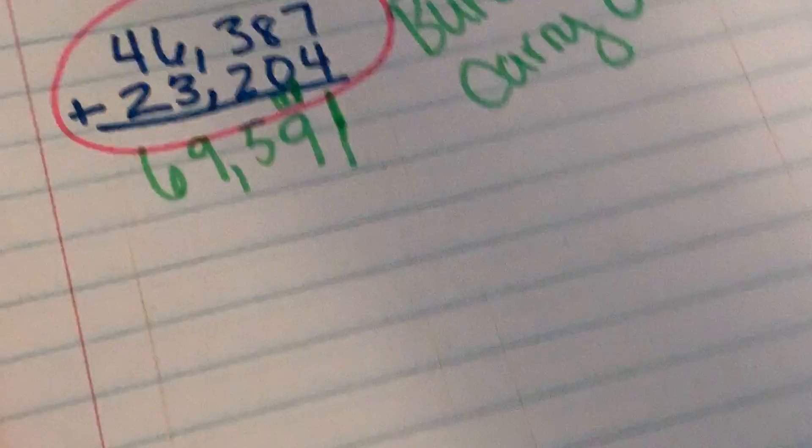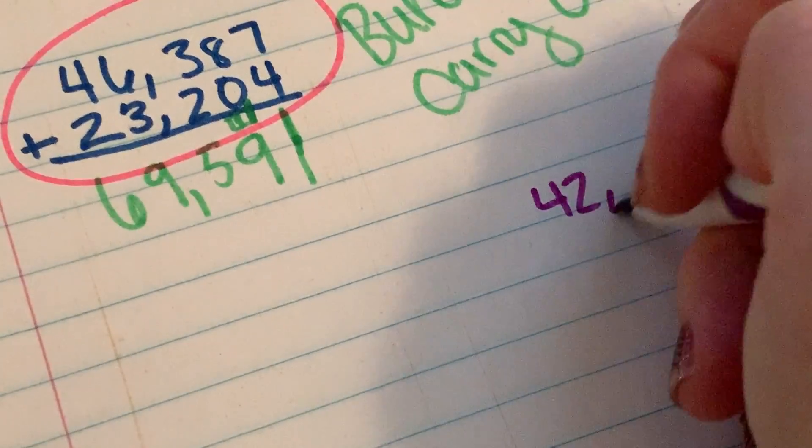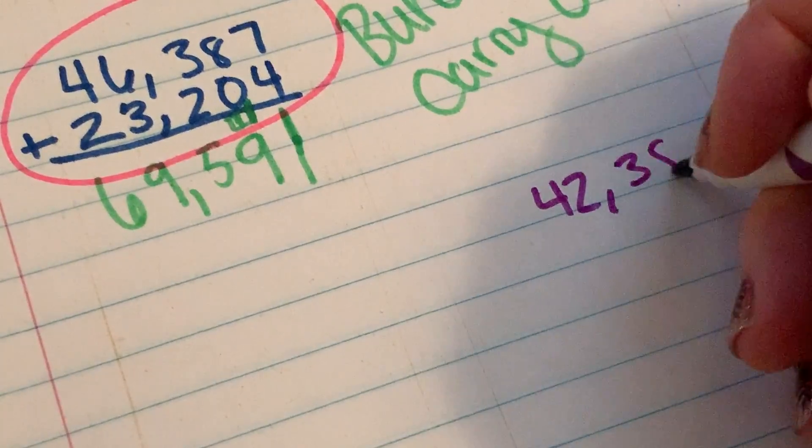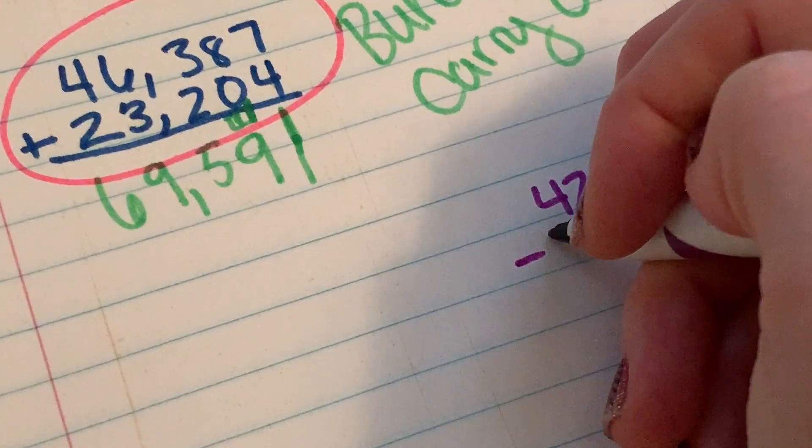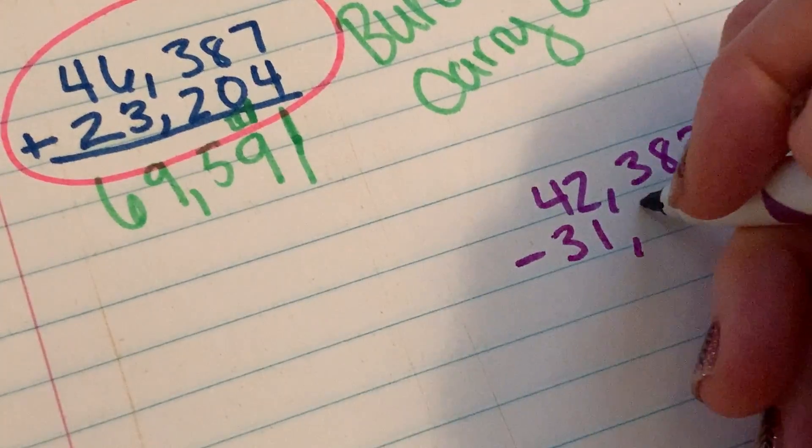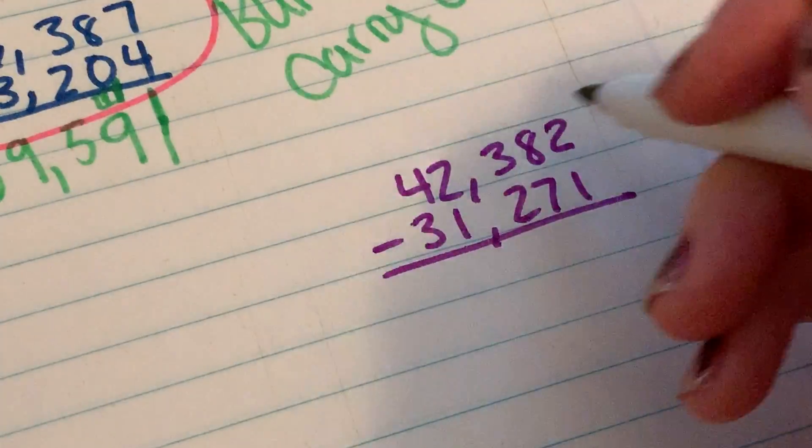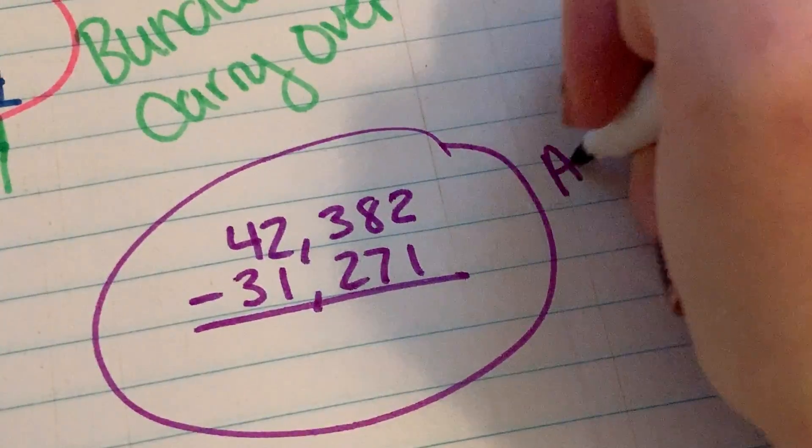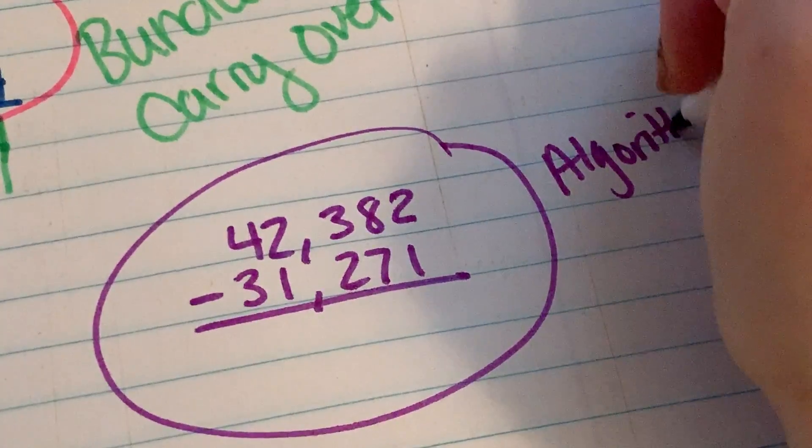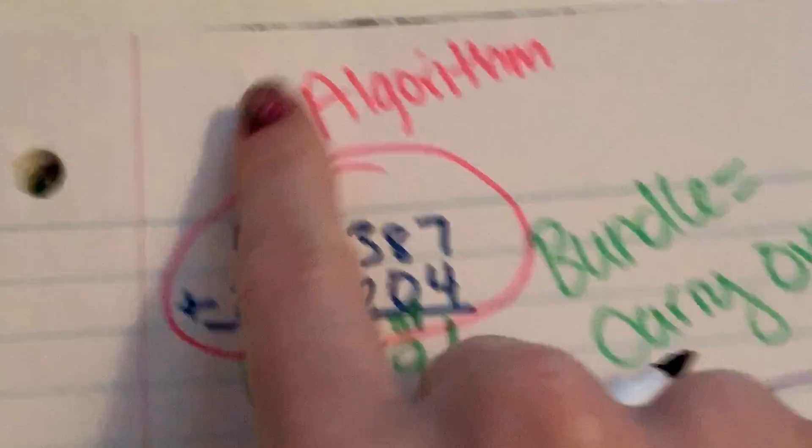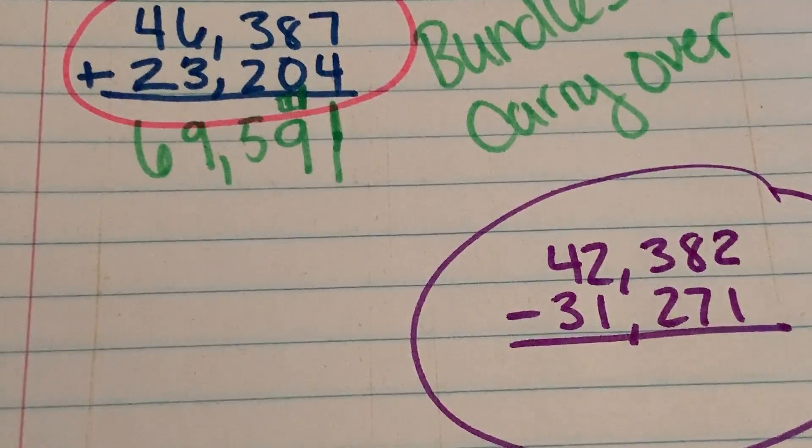They're going to do the same thing for subtraction. So whenever they have, like, 42,382 take away 31,271, so this would be the algorithm. That's what you need to know. These are algorithms. So you'll hear those words.